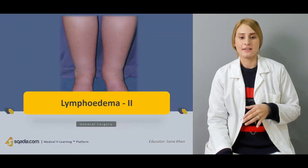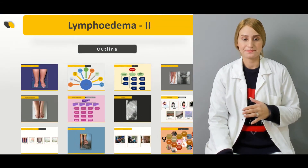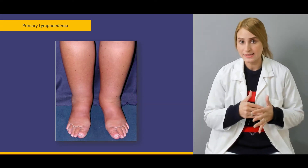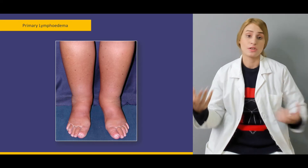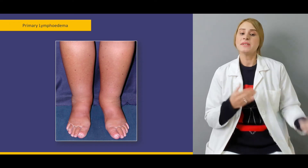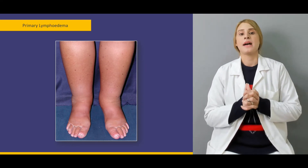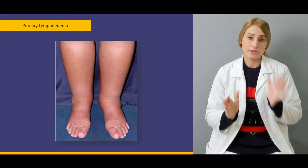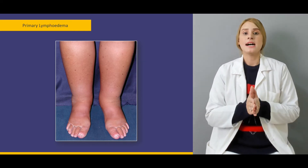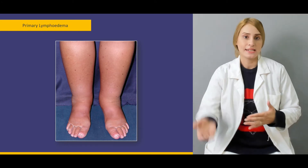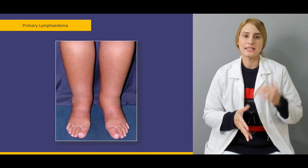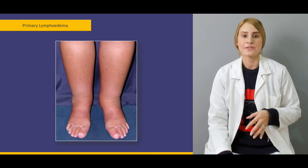Let's have a look at the outline of today's lecture. We'll be talking about the causes behind the development of primary lymphedema — what it is and how you define it. We'll be talking more comprehensively about the level at which the problem is generated, and the mutations which lead to the development of lymphedema. We'll also be talking about some important syndromes: Milroy, Noonan, and tuberous sclerosis in the context of primary lymphedema.